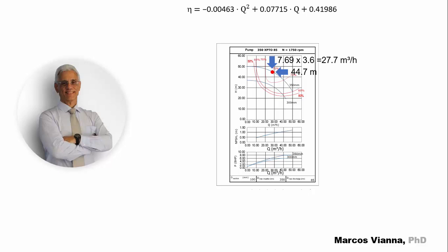We know the efficiency equation for this impeller, so we can calculate its value at the operating point, which is equal to 0.74 or 74%. Also, we know the BHP equation for this impeller, so we can calculate its value at the operating point, which is equal to 6.40 HP. Finally, we know the required NPSH equation for this impeller, so we can calculate its value at the operating point, which is equal to 0.83 meters.